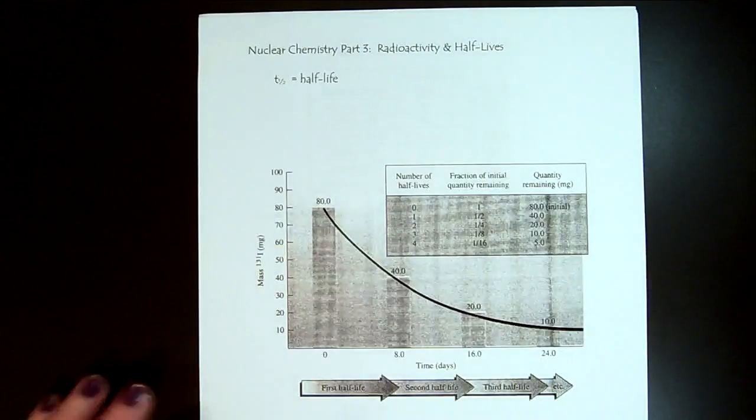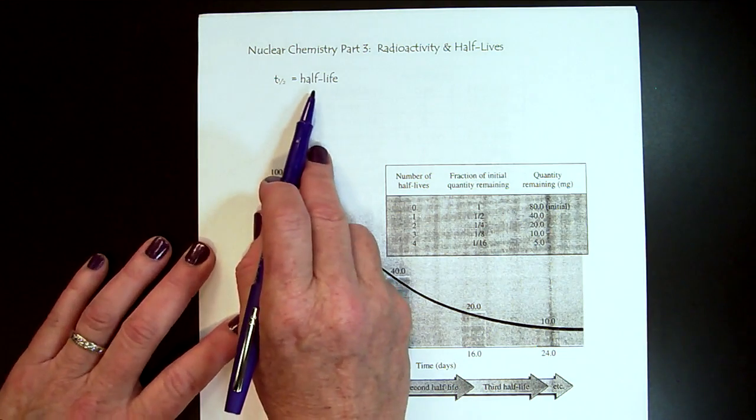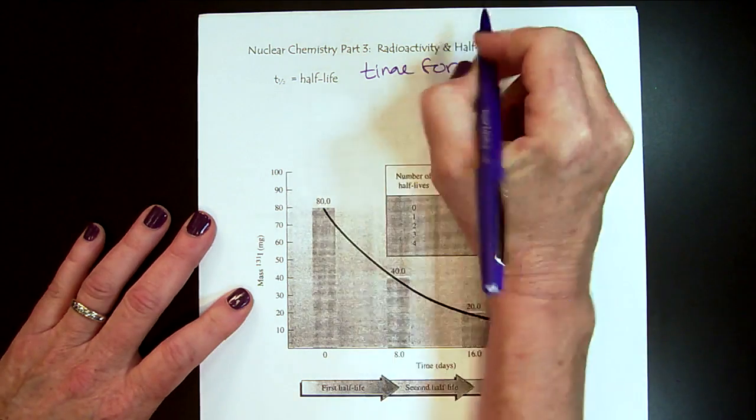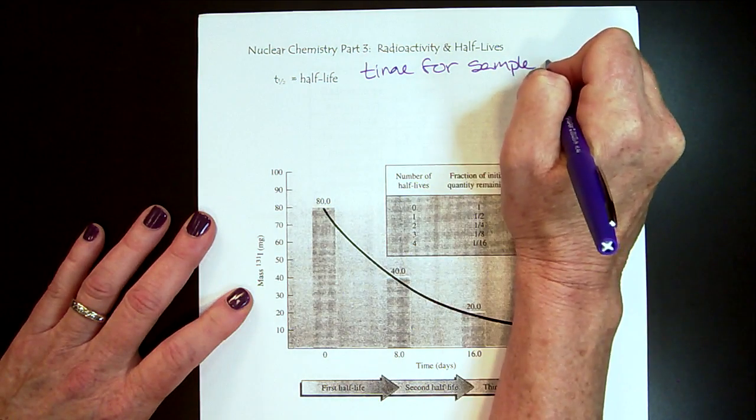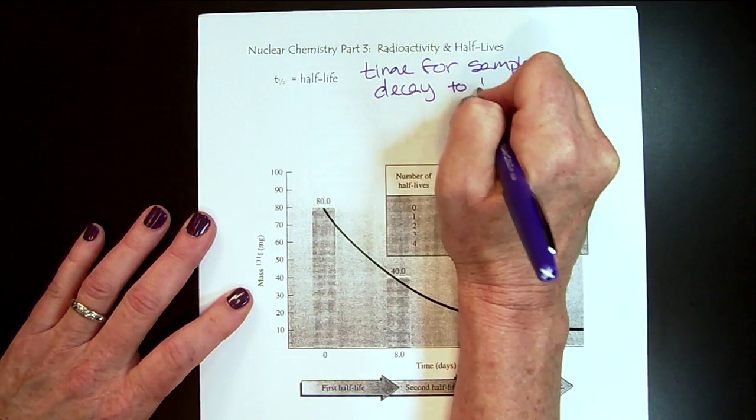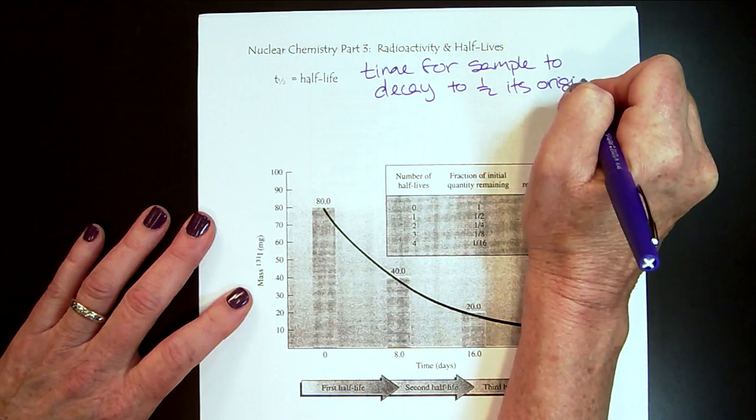Welcome to nuclear chemistry part 3. In this video we're going to look at radioactivity and half-lives, how long it takes things to decay. Let's go ahead and get started. So the first thing we want to do is make sure everyone understands the definition of half-life. It's the time for the sample to decay to one half its original mass.